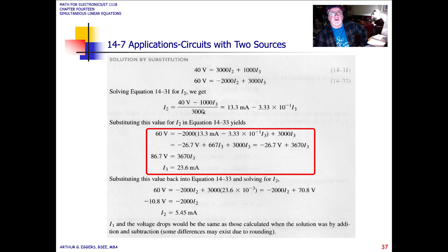Substituting then this value for I2 into the second equation, 60 volts minus 2000 I2 plus 3000 I3, gives us an expression that eliminates one of the terms. It eliminates I2 so that we only have everything in terms of I3. So minus 2000 times 13.3 milliamps minus 3.33 times 10 to the minus 1 I3 plus 3000 then becomes our terms that we've multiplied through and added into the second equation. So we end up with 60 volts is equal to minus 26.7 volts plus 667 I3 plus 3000 I3.